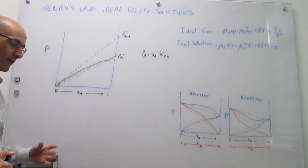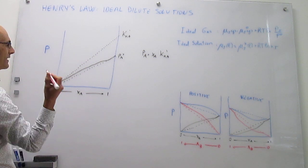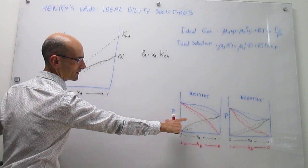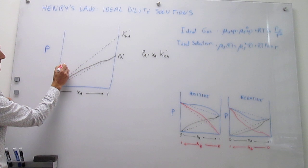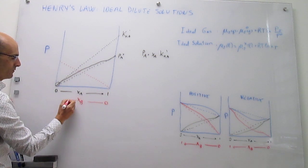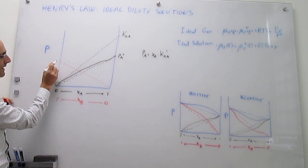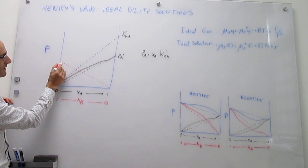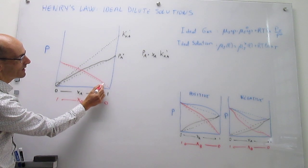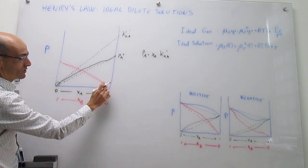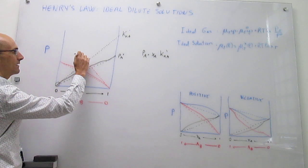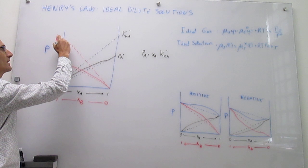Now let's draw the other component, B. For B you have something similar. The vapor pressure of B when pure is lower than that of A when pure, so B is less volatile than A. Going from zero to pure B, at high concentrations B follows Raoult's law — the dashed line. After a while it deviates positively, and then at low concentrations there is again a linear dependence, but it does not agree with Raoult's law. It follows a different line, giving Henry's constant K sub B prime and the corresponding pure vapor pressure of B.